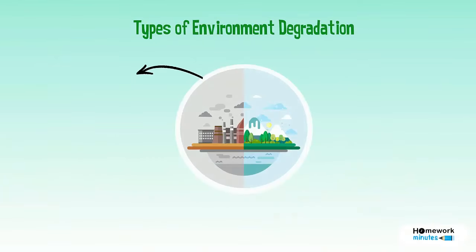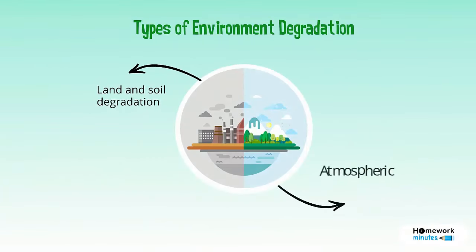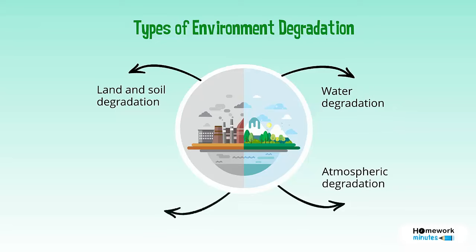Types of Environment Degradation: Land and Soil Degradation, Atmospheric Degradation, Water Degradation, and various other kinds of pollution.